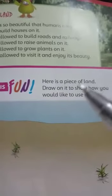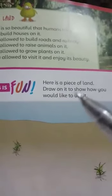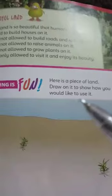Here they are saying: here is a piece of land — draw on it to show how you would like to use it. This is the activity on your page. This is the empty land they made for you. You can use this land as you like. If you want to build a house, grow a plot, or raise animals, you can draw it. This is your activity.